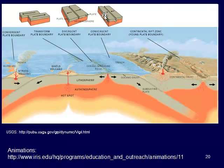We can also have convergent plate boundaries where two plates collide and one subducts below the other. The heavier, denser plate sinks below the lower-density plate. As it is forced into the asthenosphere, any water present in that subducting plate gets forced out, which actually helps melt the surrounding asthenosphere. That magma, being lower density, rises to the surface and eventually erupts as volcanoes — that's why we have volcanoes in the Pacific Northwest.